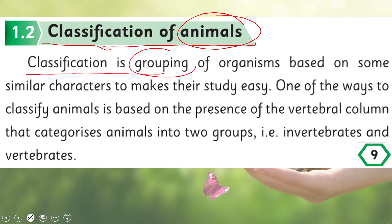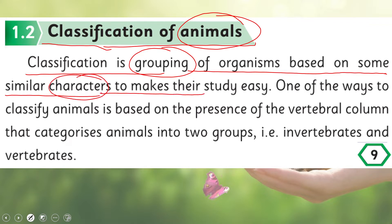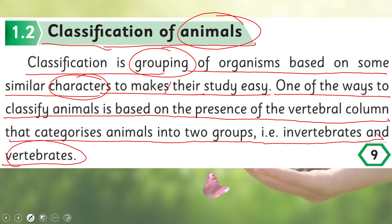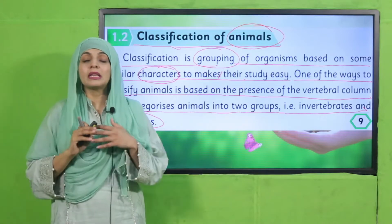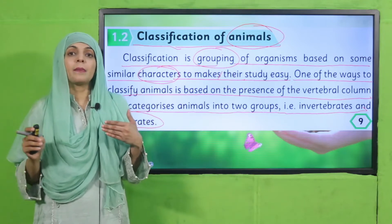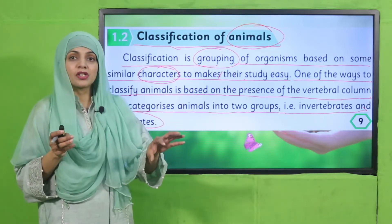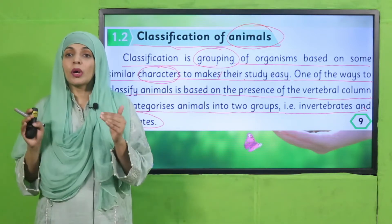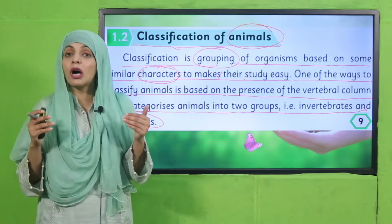Classification is the grouping of organisms based on some similar characters to make their study easy. One of the ways to classify animals is based on the presence of the vertebral column, which categorizes animals into two groups: invertebrates and vertebrates. Just like students of a similar age are grouped into one class at school, grouping animals makes every group easier to study.